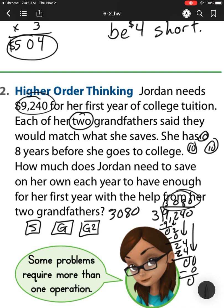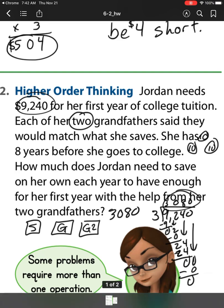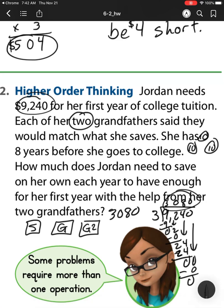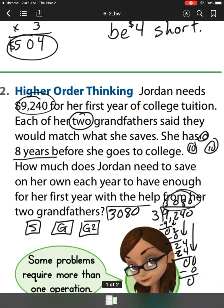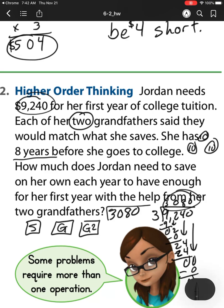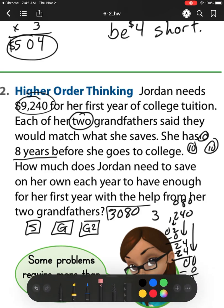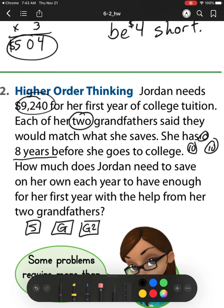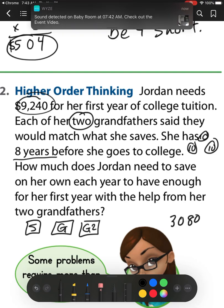However, there's some more information in this problem that we need. You'll notice that it also says that she has 8 years. So it's asking us to break this up into 8 years. So how do I break things up into 8 years? Well, if you remember, I'm going from a large number to small equal groups. So that's going to be division. So I have 3,080 divided by 8.